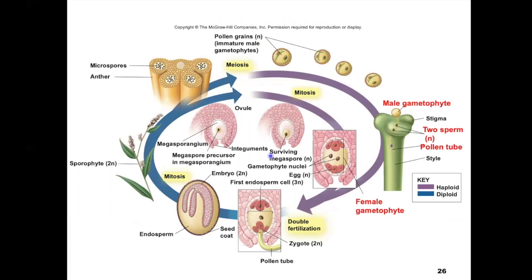To finish this part, here is your overall diagram of double fertilization and the angiosperm alternation of generations. You should now understand what's taking place in all of these different tissues as we make the angiosperm seed. That's all I have to present here — I hope that helps.